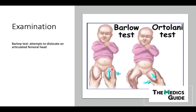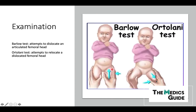Ortolani's test is done only after the hip has been dislocated. The main idea is to reduce the dislocated hip. We move in the opposite direction — abduction — and an anteromedial force is applied to the greater trochanter, which should pop the hip joint back into place and reduce the dislocation. If that happens, we have an Ortolani positive test.